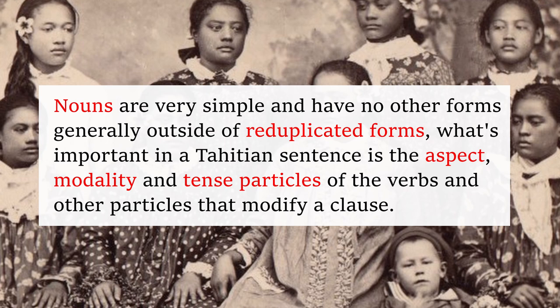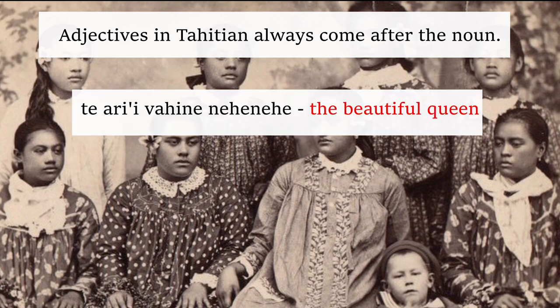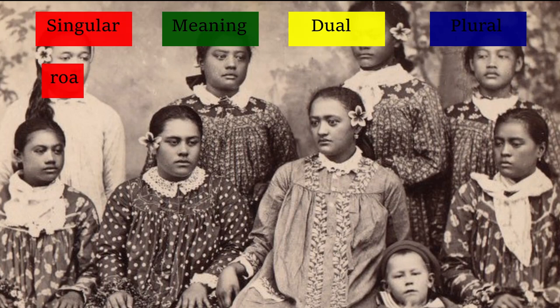Nouns. Nouns are very simple and have no other forms generally outside of reduplicated forms. What's important in a Tahitian sentence is the aspect, modality, and tense particles of the verbs and other particles that modify the clause. Adjectives. Adjectives in Tahitian always come after the noun. Te hari'i vahine noa noa — the beautiful queen. Adjectives take reduplicated forms for the singular, the dual, and the plural forms. Some adjectives don't have dual forms, and others have no plural or dual form. For singular forms, we have 'roa,' meaning long. In the dual form, this is 'roro.' In the plural form, this is 'roa roa.'